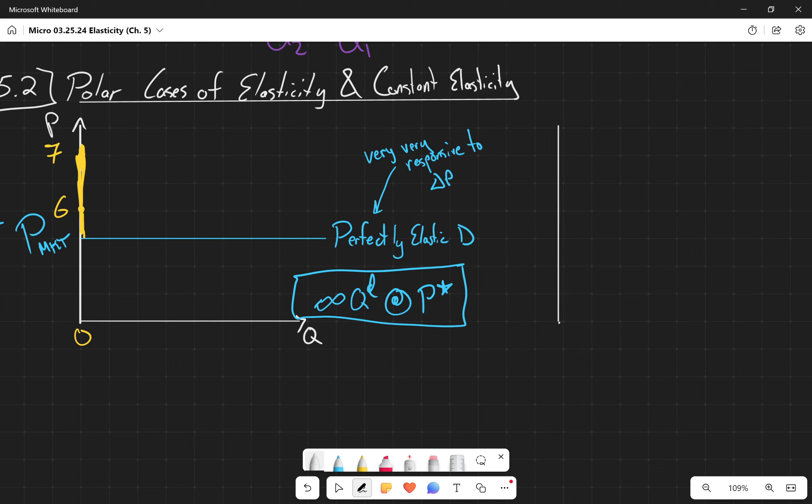Is the situation where we have a perfectly vertical demand curve, and we call this the perfect inelasticity demand curve. The other way we talk about this is as the zero elasticity demand curve.